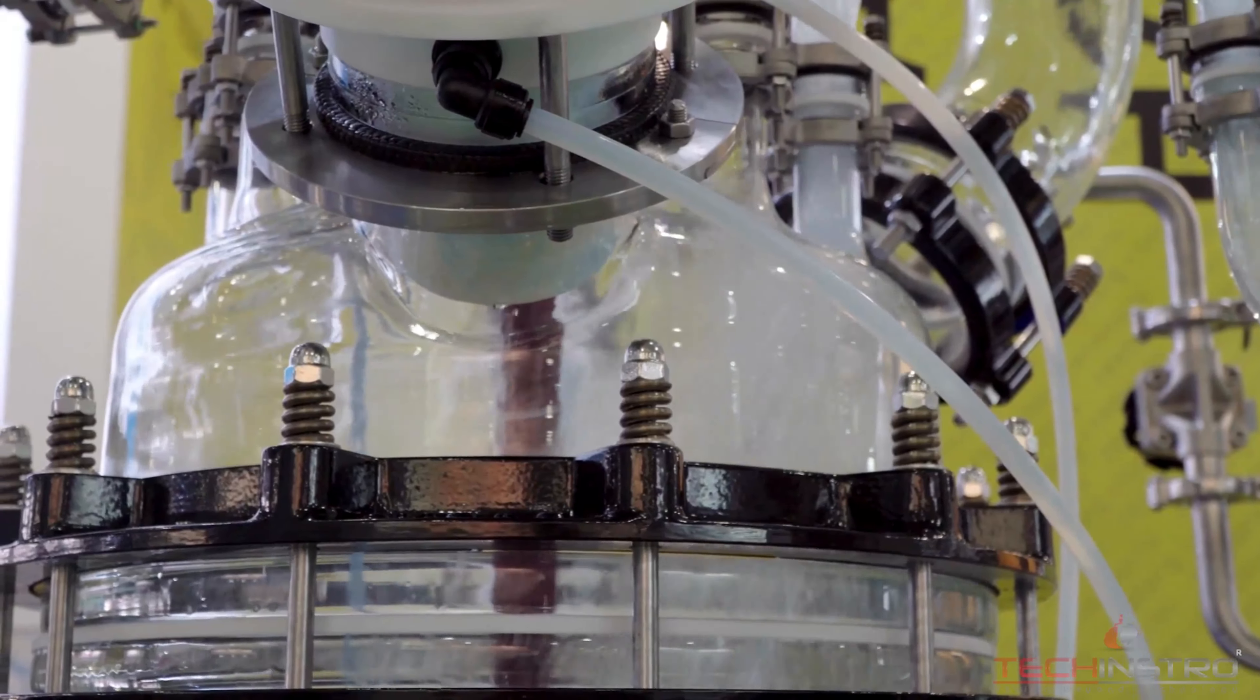Autoclave reactors often feature a heating system such as electrical heaters or jacketed vessels to control and maintain the reaction temperature. The temperature is raised to the level needed for the reaction to occur. This can range from moderate temperatures to very high temperatures depending on the nature of the chemical reaction.